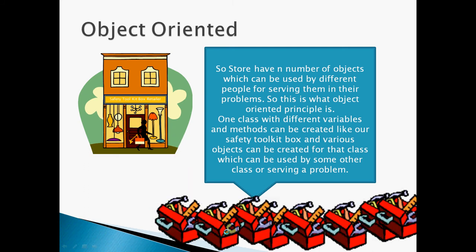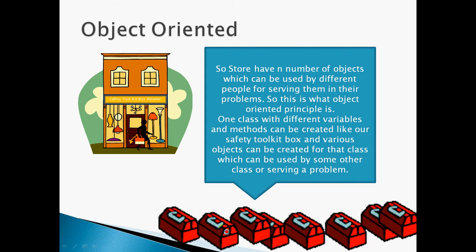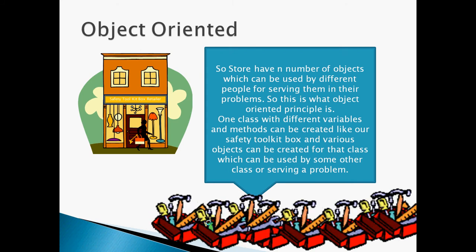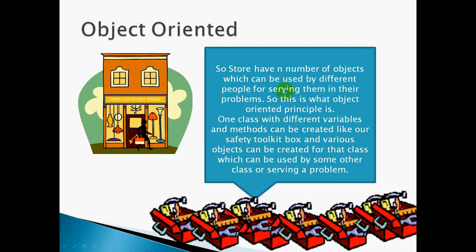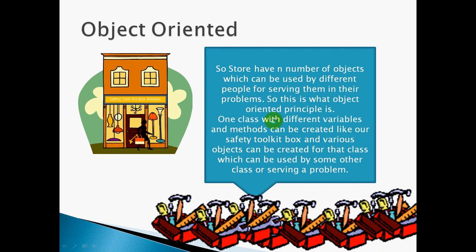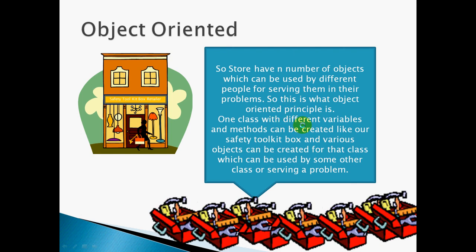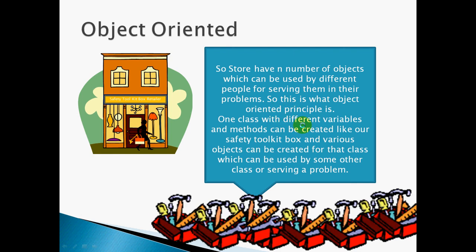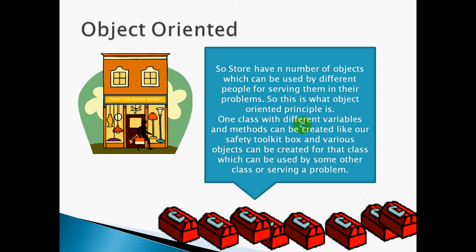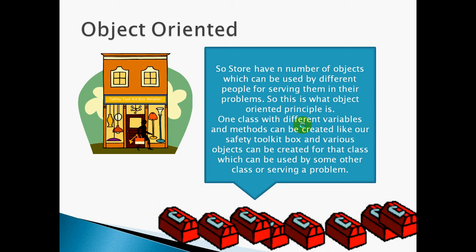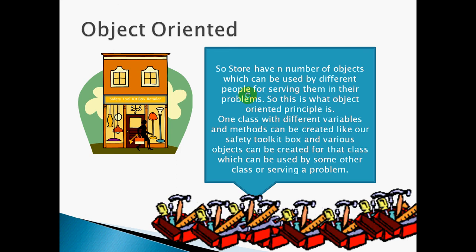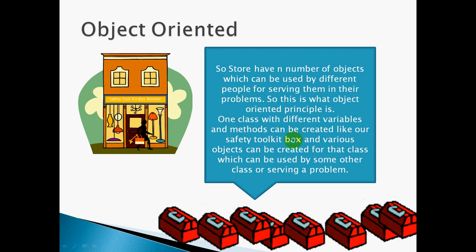It helps them solve their problems. So this is how the object-oriented principle works: a class is created and objects are made from it, which can be utilized by different classes and methods to fulfill their purposes. One class with different variables and methods — like a Safety Toolkit Box — and various objects can be created from that class, which can be used by other classes or for solving a problem or fulfilling a function.